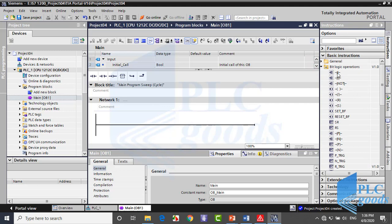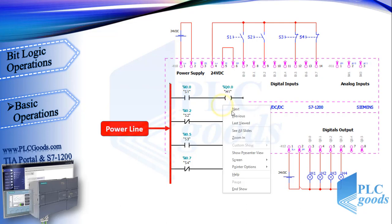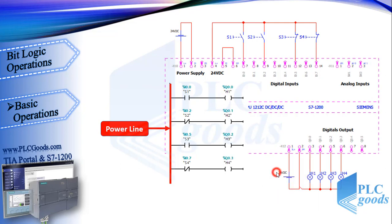Now let's start with these three instructions which we've used before. See this PLC wiring and ladder program. As you know, ladder programs are similar to industrial circuits, and we can suppose here is a power line — but virtual, and in the CPU's program it's not real. Now see the first line.